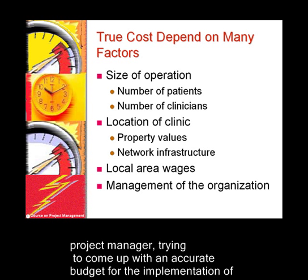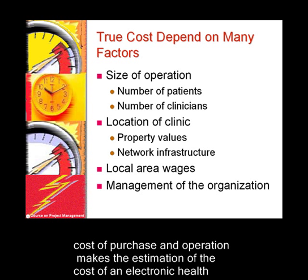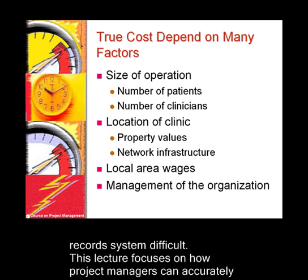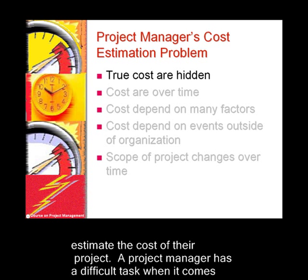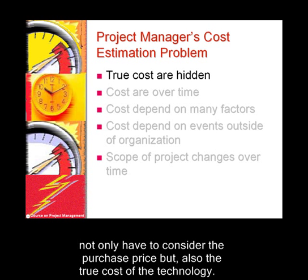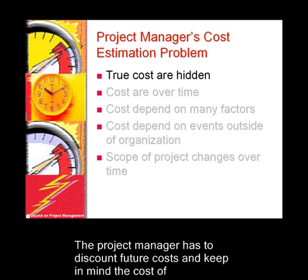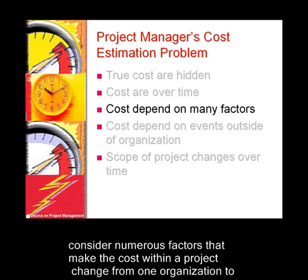All of this makes the cost to one organization at one point very different than the cost to another. For a project manager, trying to come up with an accurate budget for the implementation of an electronic health record system is a cause for concern. The variability of cost of purchase and operation makes the estimation of the cost of an electronic health record system difficult. This lecture focuses on how project managers can accurately estimate the cost of their project.